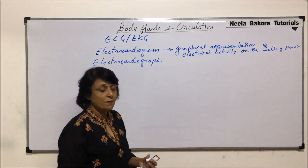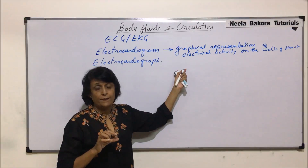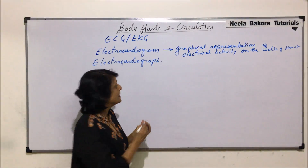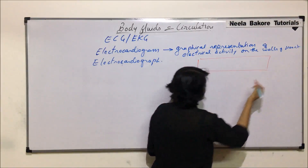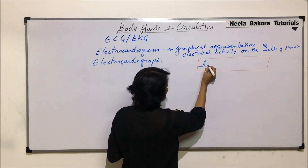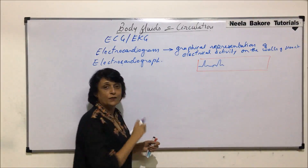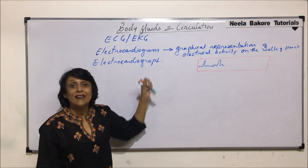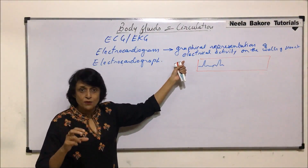Whatever activity is taking place on the wall of the heart, it is graphically recorded. You have seen that strip of paper on which the graph is made — we get a strip of paper and on this strip we find a graph. We will talk about its interpretation later. That strip of paper is known as the electrocardiogram.